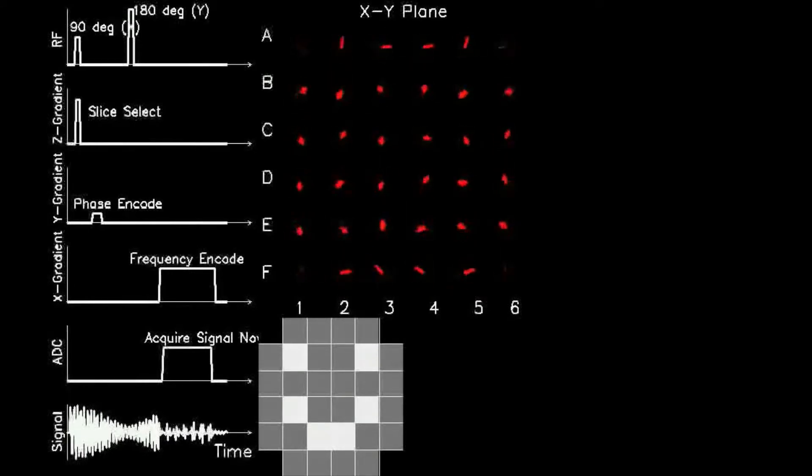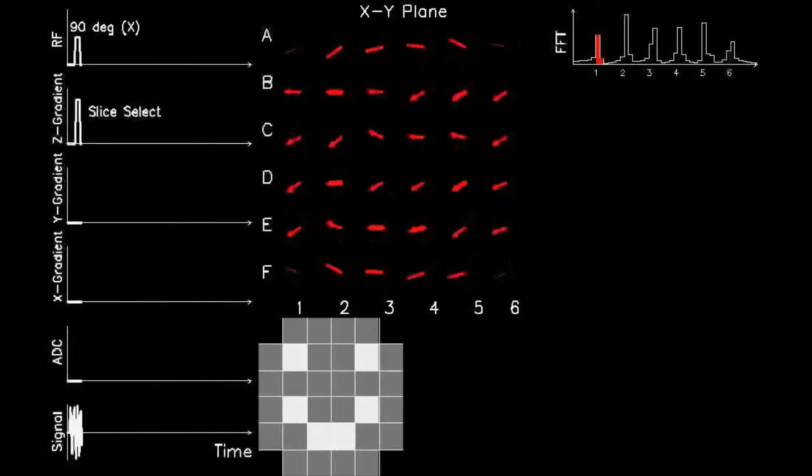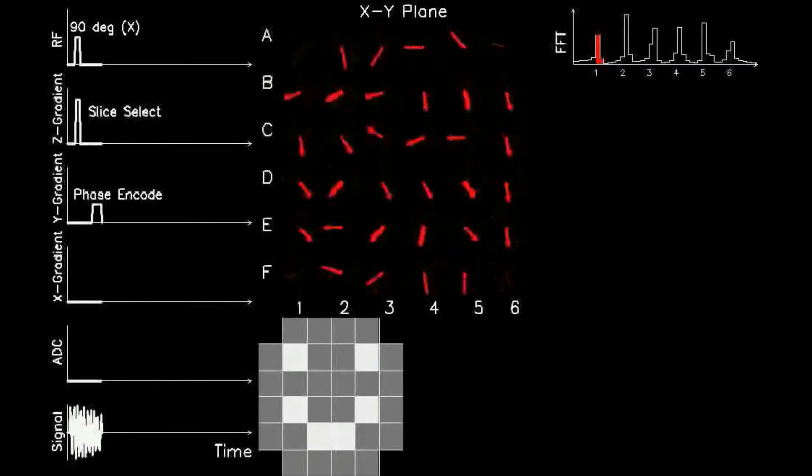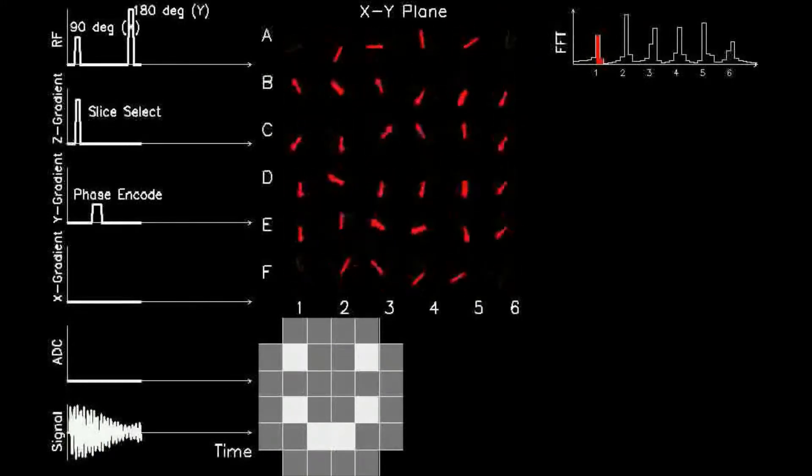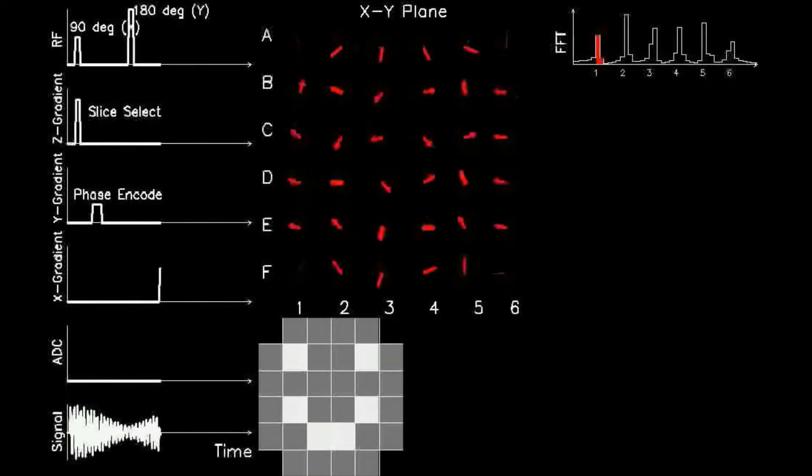The top middle panel shows a corresponding 6 by 6 array of red arrows representing the transverse components of the net magnetization, or spins, within each voxel. Again, the left-hand panel shows multiple timelines.